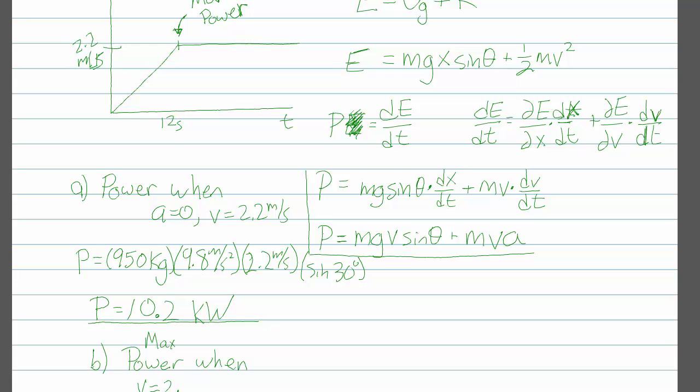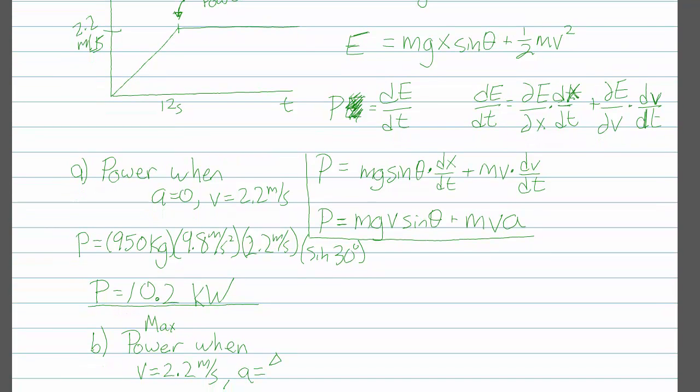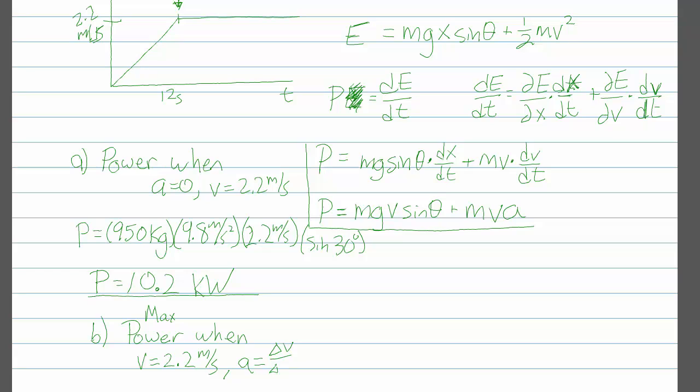So the maximum power is when v equals 2.2 meters per second. And a equals, well, we have to calculate that. It's the change in velocity versus the change in, versus how long it takes to attain that velocity. So that's 2.2 meters per second divided by 12 seconds, which comes out to 0.183 meters per second squared.